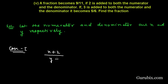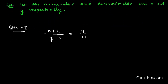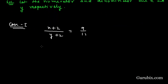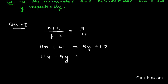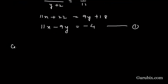Then we get 9 over 11. Now we shall cross multiply this equation, giving us 11x + 22 = 9y + 18, which becomes 11x − 9y = −4. This is our equation number 1.